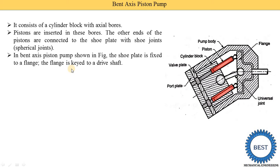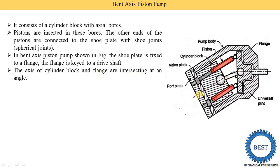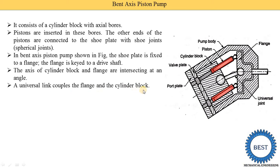You may have already studied the various types of joints and key types in machine design. The axis of the cylinder block and the flange intersect at a certain angle — they are not in a straight line, which is why it is called the bent axis piston pump. A universal joint couples the flange and the cylinder block, meaning the universal joint joins the cylinder block and the flange.